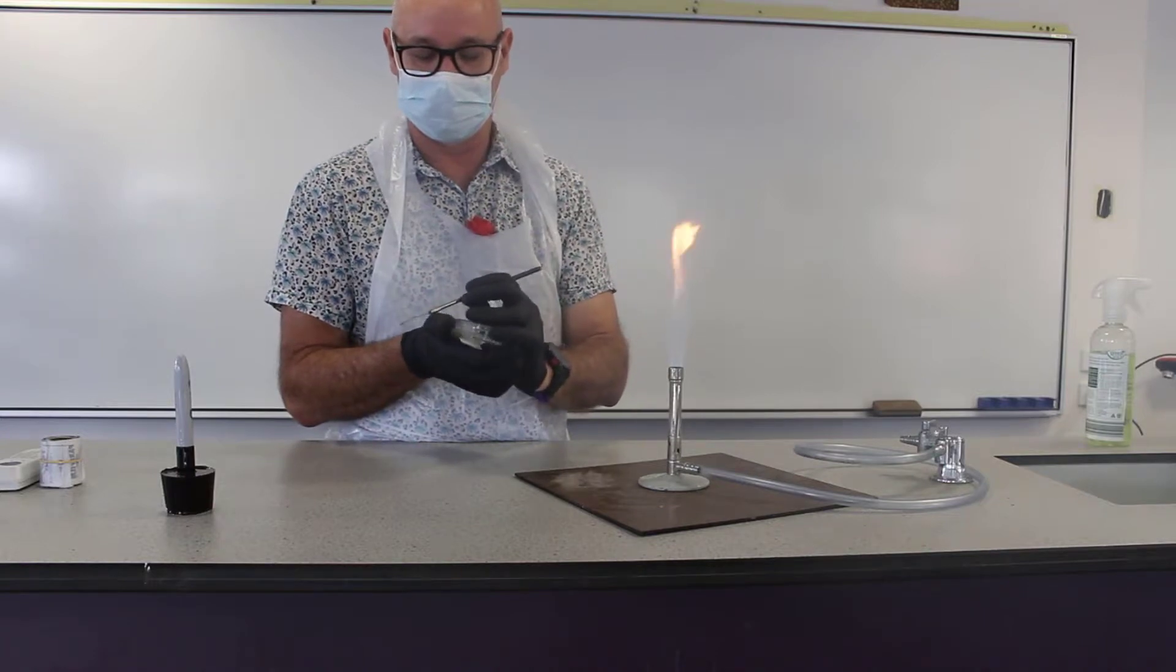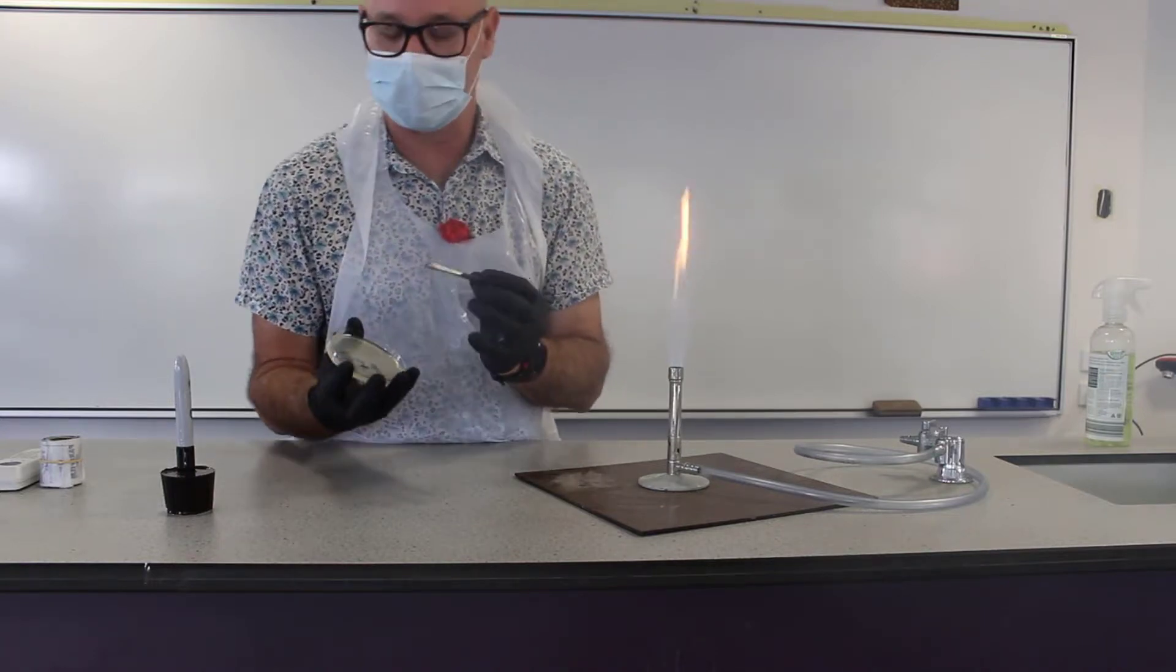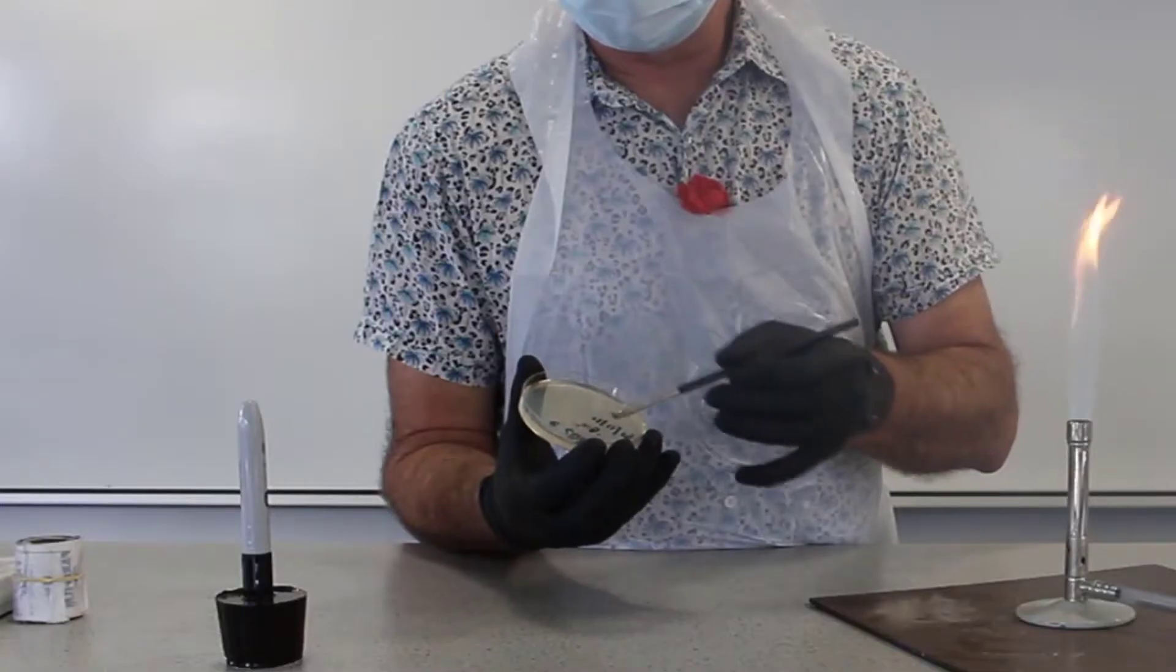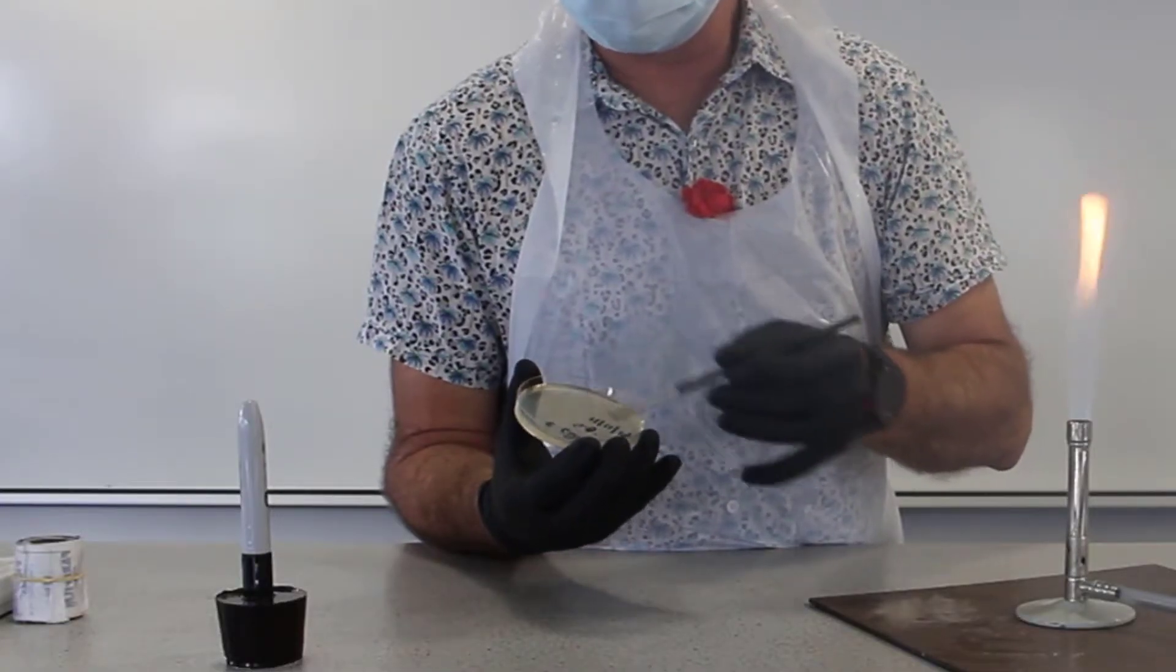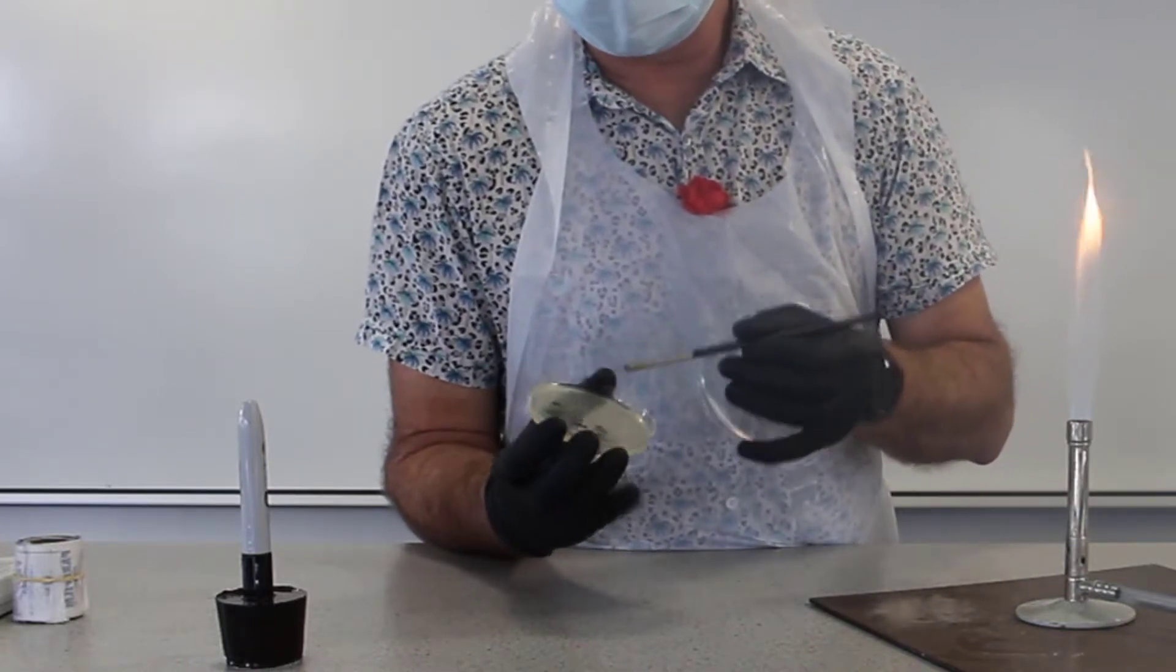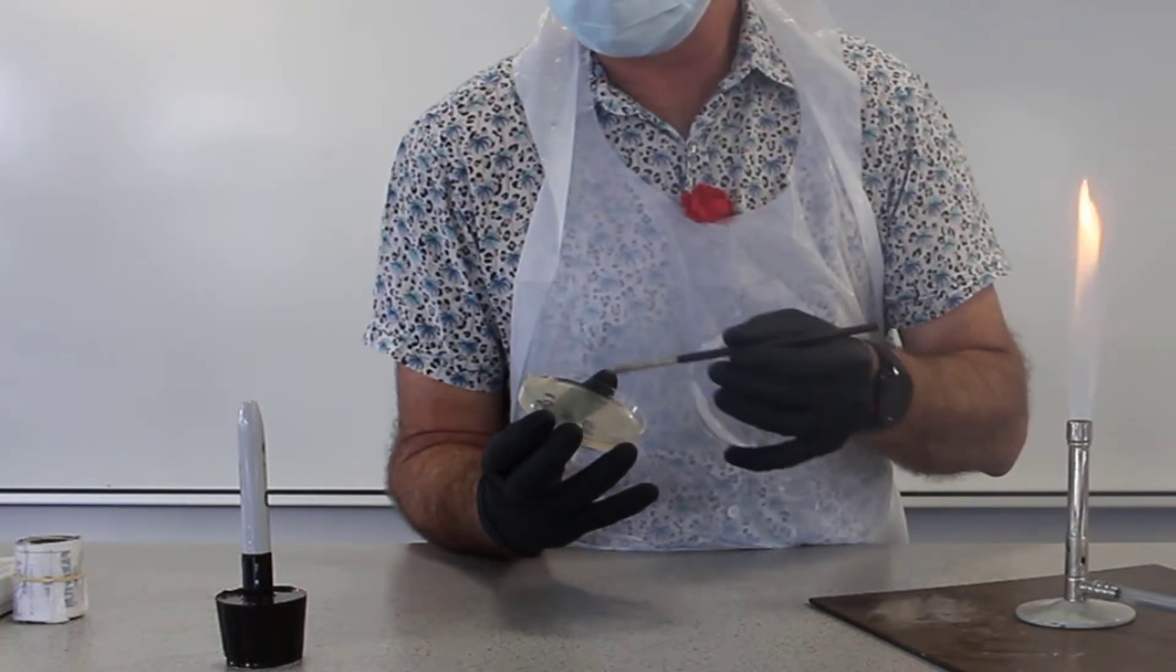What we're going to do is a 16-streak dilution. Firstly we want to in one section here spread the primary inoculant and then we're going to do 16 streaks across the plate.